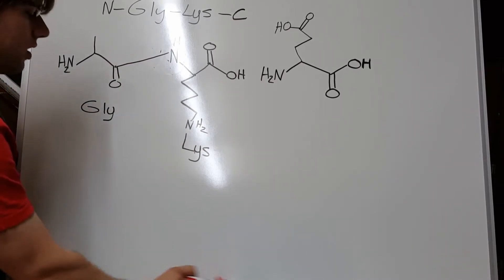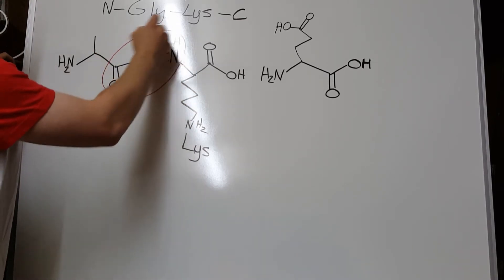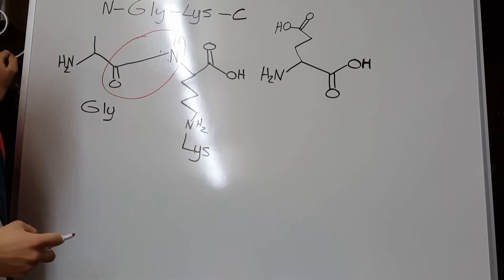So, if you remember your carboxylic acid derivatives chapter, what you have right here is an amide. A peptide bond is just a fancy name for an amide bond that connects two amino acids together.